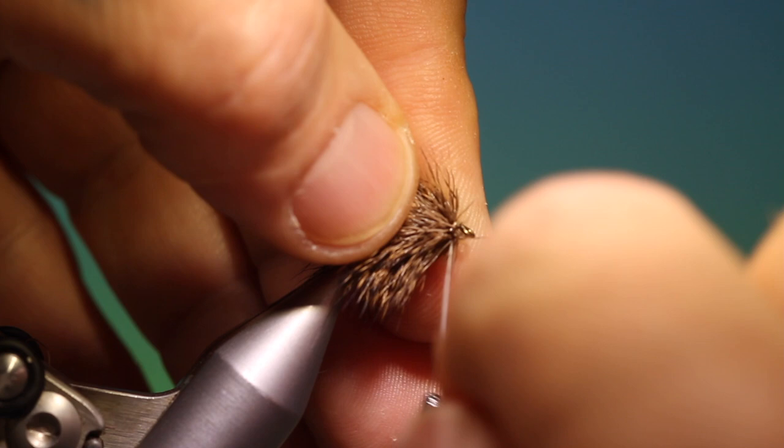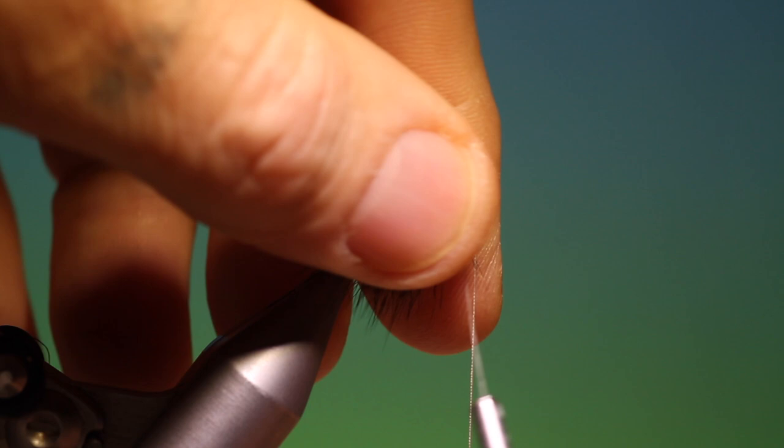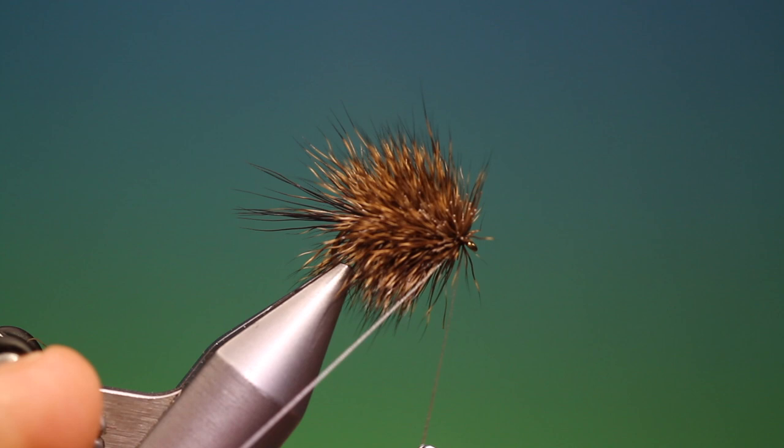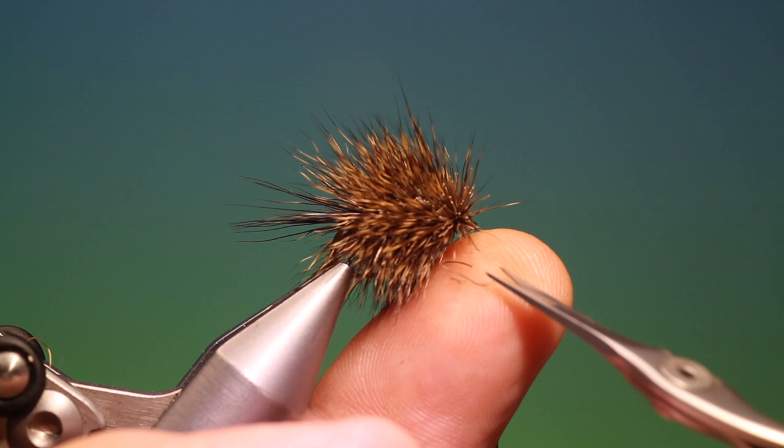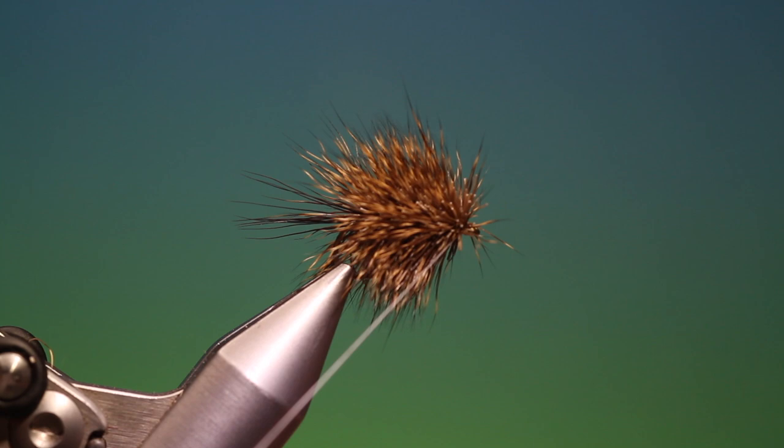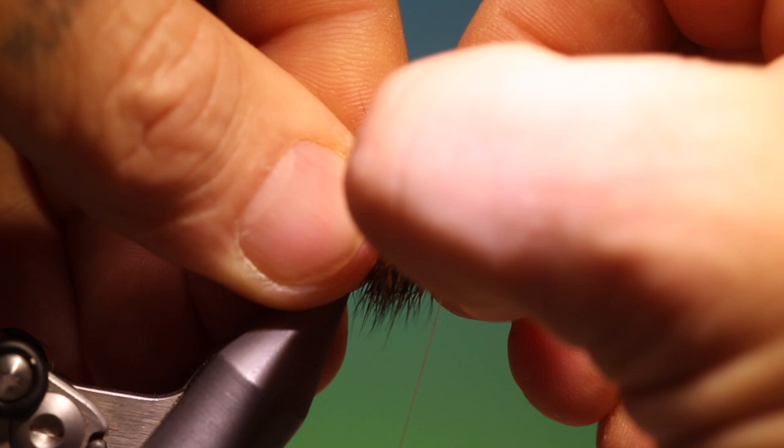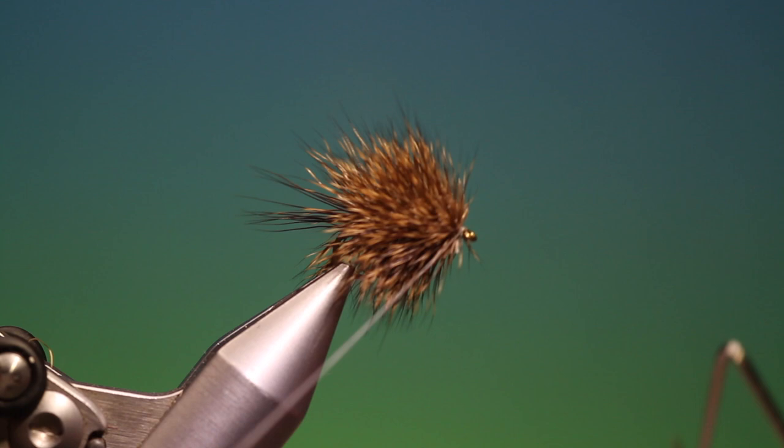And then we can catch in our dubbing loop. Like so. We can remove that. Take my whip finisher. Put one in. And then we can push all that back. Put one more in. Remove our tying thread.